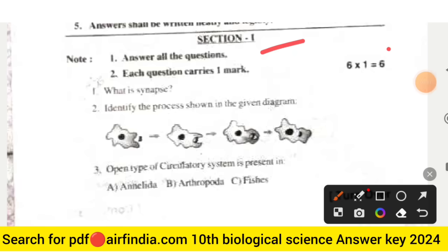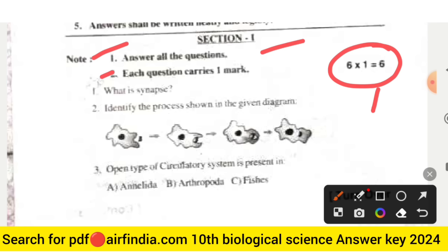Section one starts with six marks — answer all the questions, each question carries one mark. This section is completely six marks. The first question is: what is synapse? The second question is: identify the process shown in the given diagram.